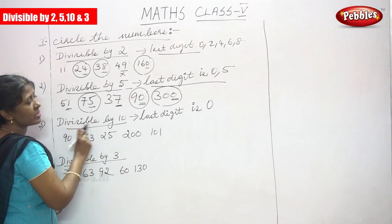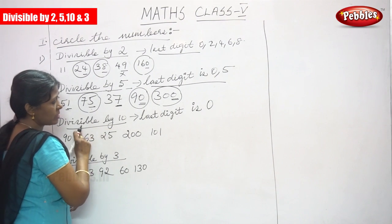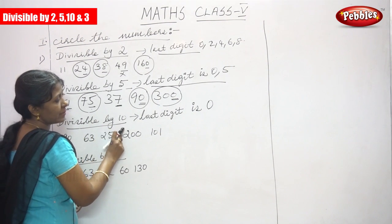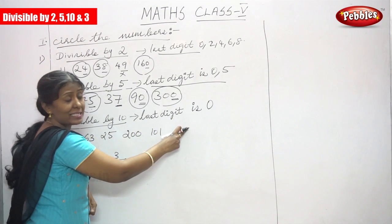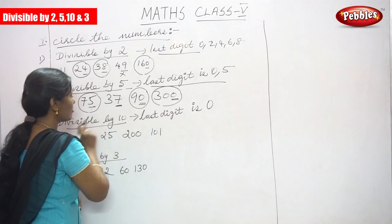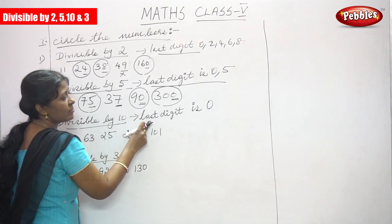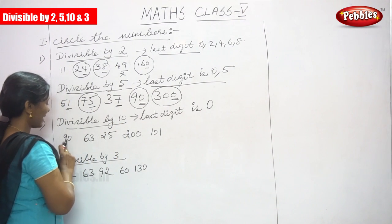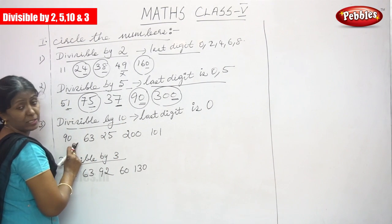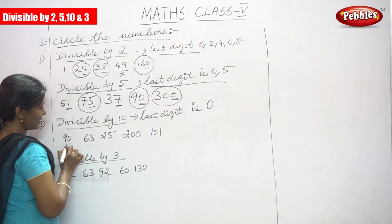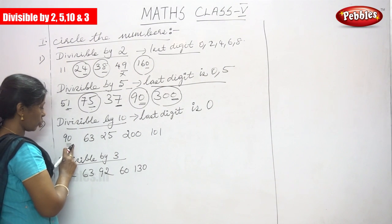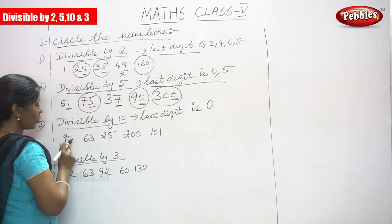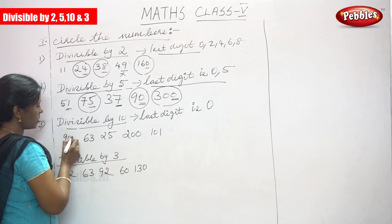The third question: divisible by 10. The rule is if the last digit ends with 0, it is divisible by 10. So 90 — the last digit is 0, so it is divisible by 10, because the last digit ends with 0.